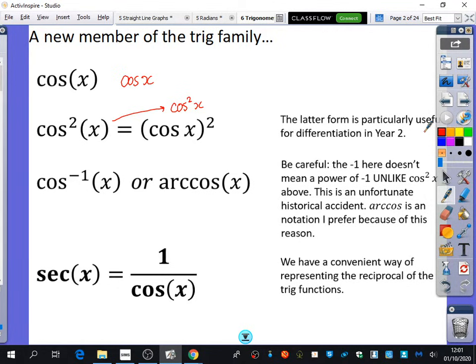And then we've got this form here where we have cos inverse of x, or you'll also know that can be written as arccos x. This is where we really need to be careful because the minus 1 here doesn't actually mean a power of minus 1, unlike here where the power did mean a power of 2. This is an unfortunate historical accident.